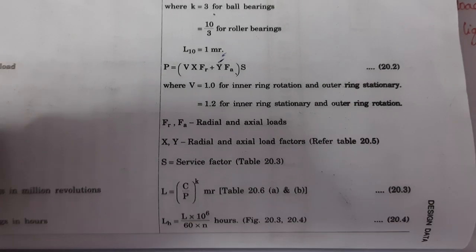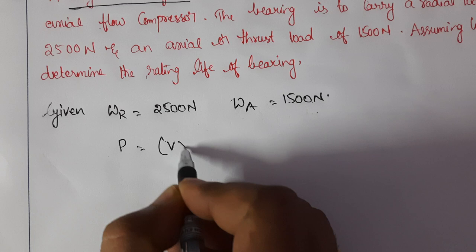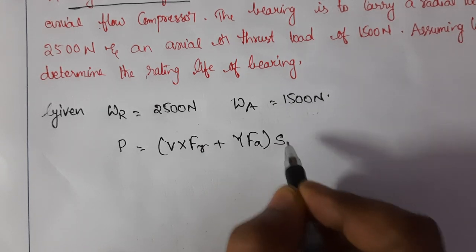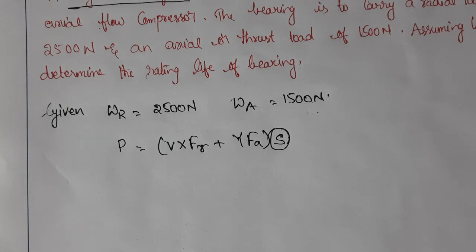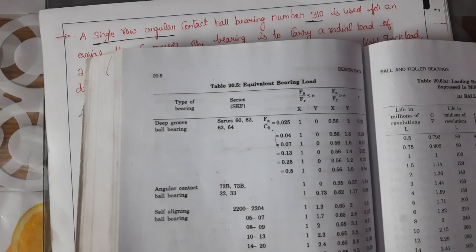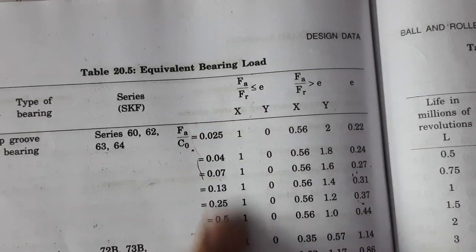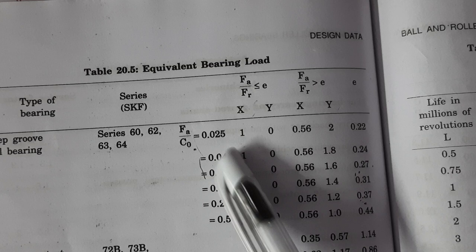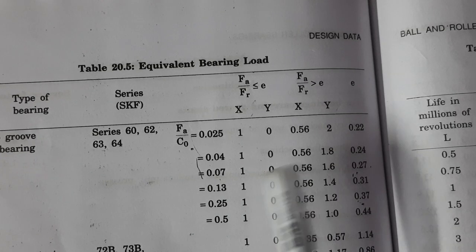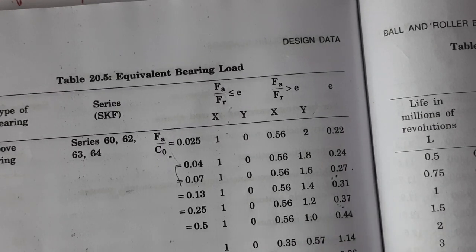The full formula is P = v × X × Fr + Y × Fa × S, where S is the service factor found from another table. Before solving, we need to find the fa/fr value. If fa/fr is less than e, we take X and Y from one set of values; if greater than e, from another set. The e value can be found from the table.